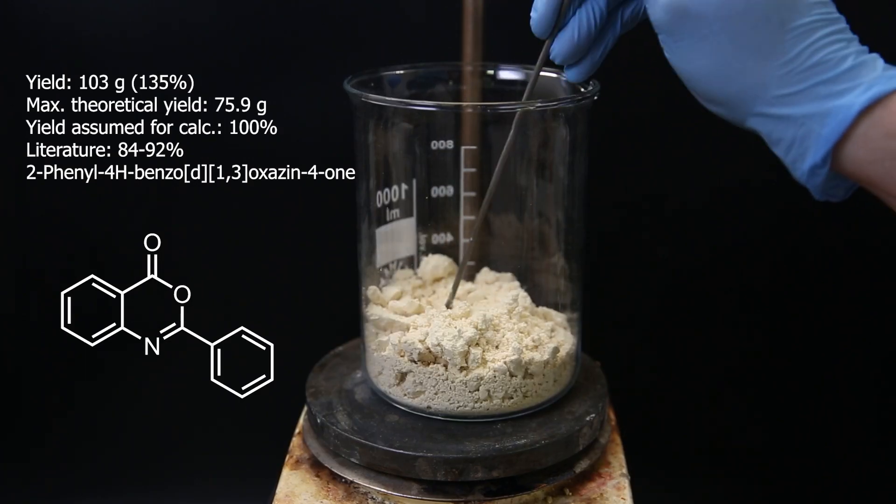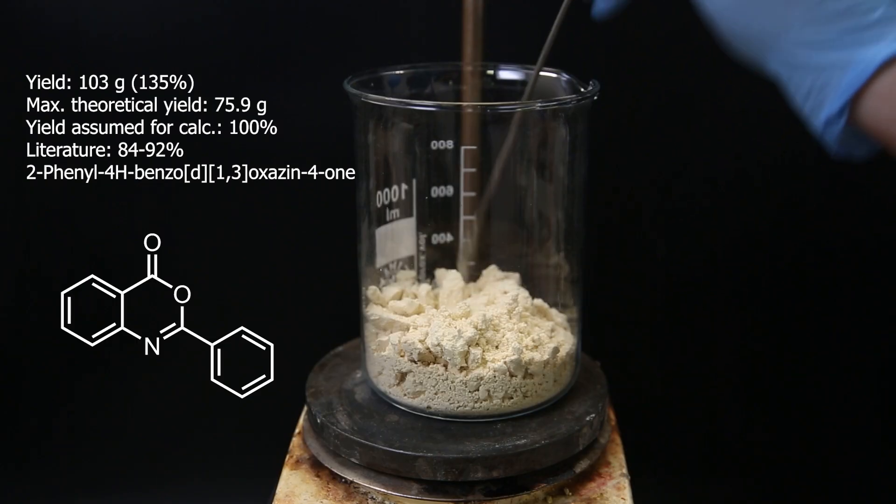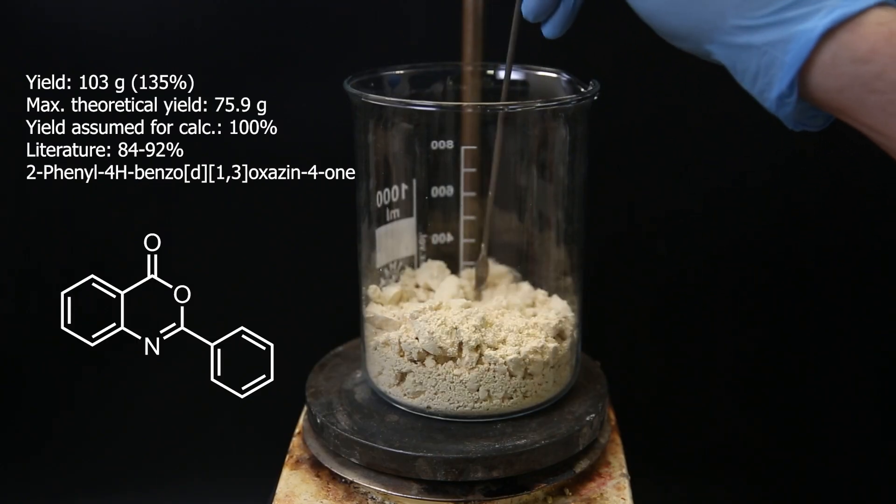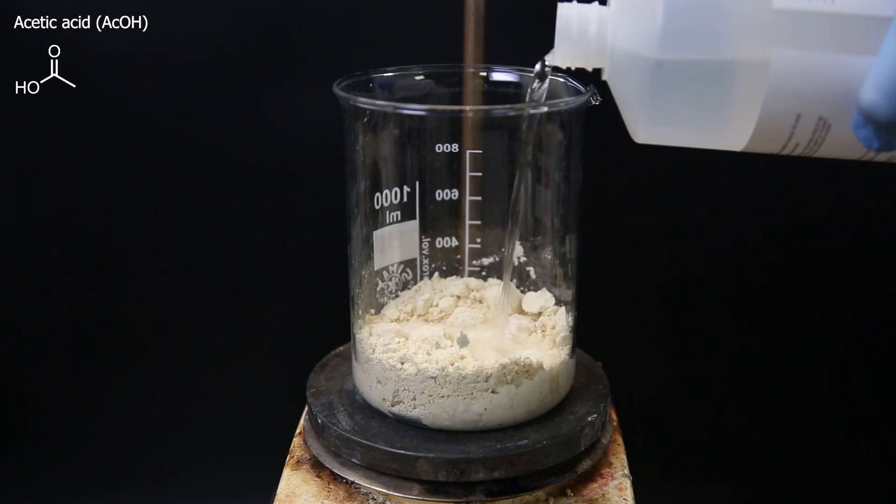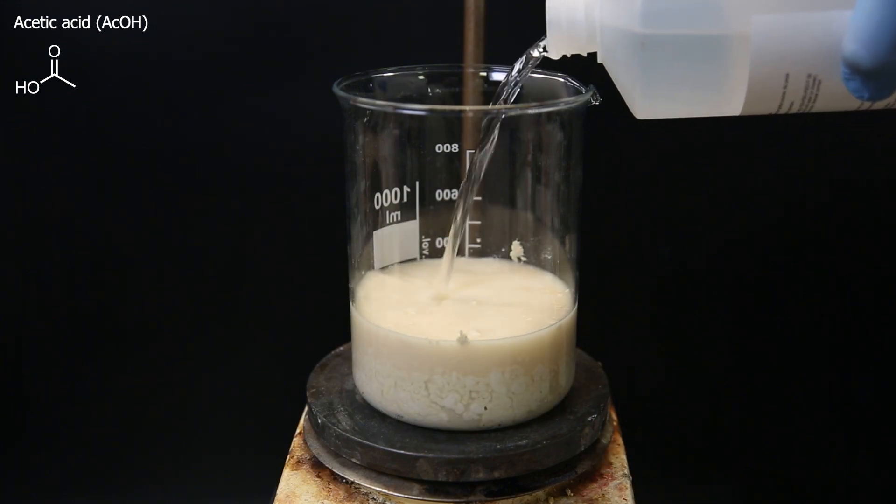Either way, I can forward it to the next reaction without issue, and I assume the yield is 100% for the calculations. So, for the next reaction, I largely dissolve the material in about 600ml of acetic acid.